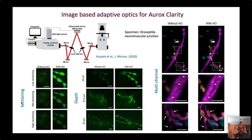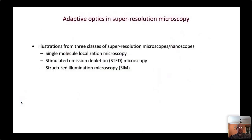Moving on from conventional microscopy to the main topic: super-resolution microscopy. I'll show examples of how we've improved imaging quality in three types — single-molecule localisation microscopy, stimulated emission depletion (STED) microscopy, and structured illumination microscopy. Since some background on these was already covered in this session, I can move directly to what we've been able to achieve with aberration correction.